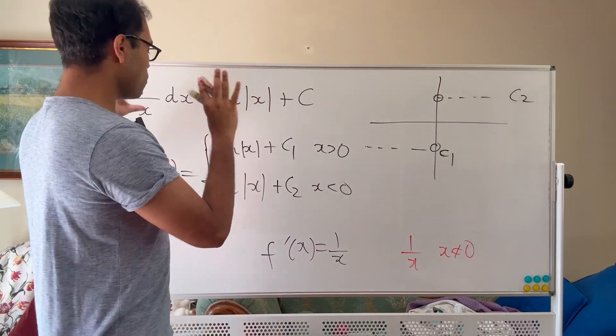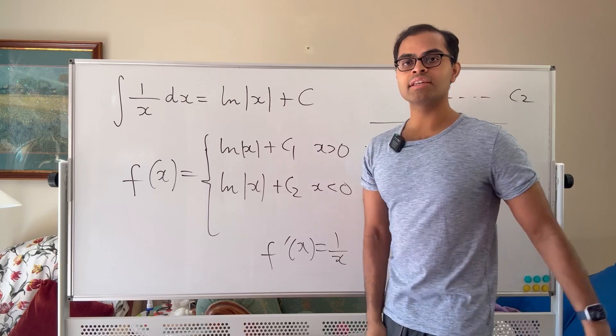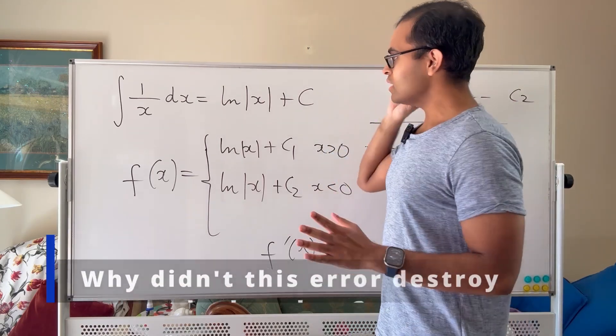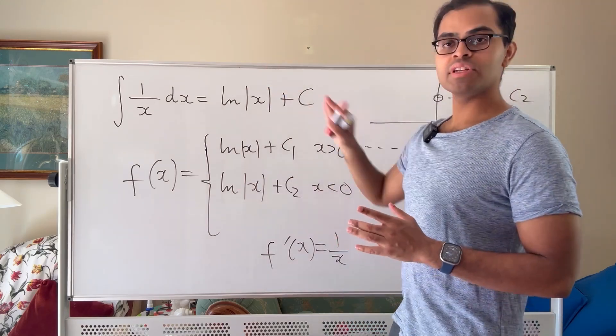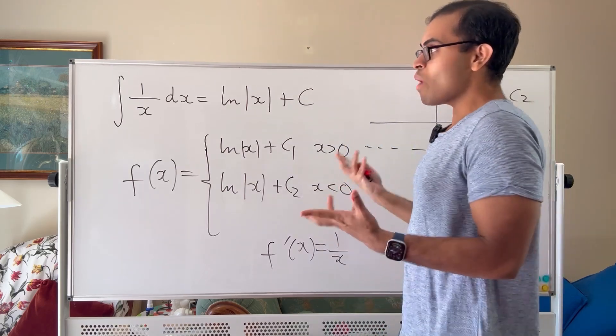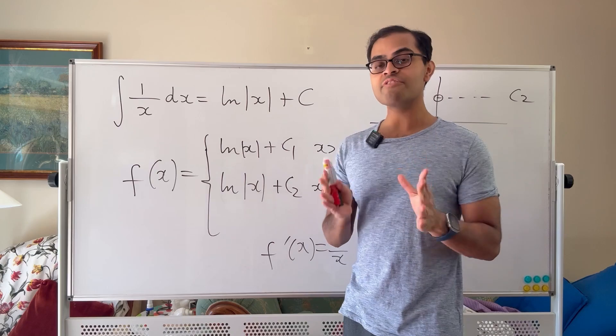So that's the explanation for why this is the general form of the anti-derivative of 1 over x. Now this is something that is often a misconception. It's often written wrongly in calculus classes, books, etc. The anti-derivative is written like this. So why isn't this more of a big deal? If you haven't heard of it before, why haven't you heard of it before? Well the main reason is that most of the applications for integration are to definite integrals.